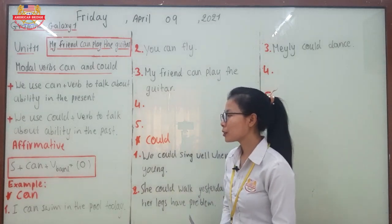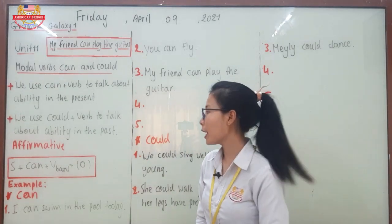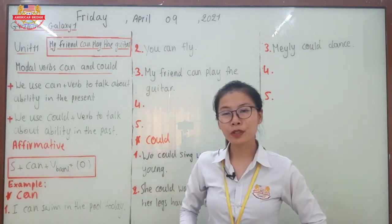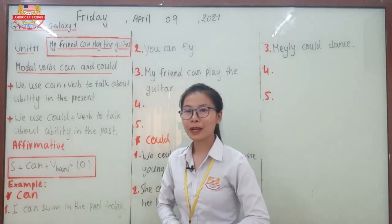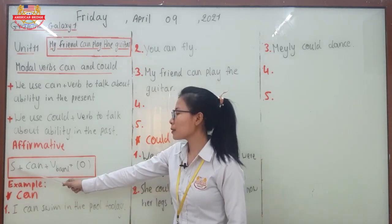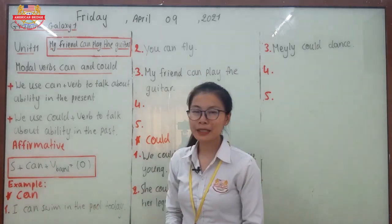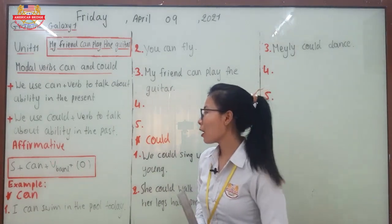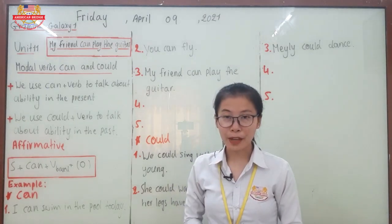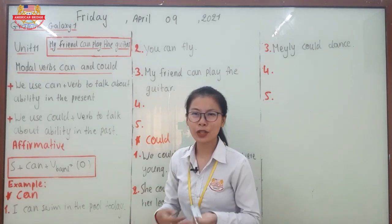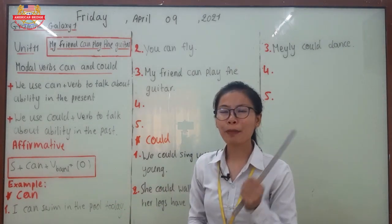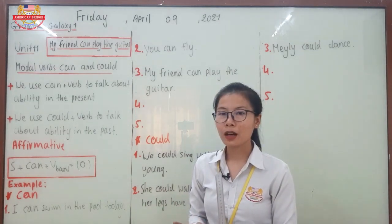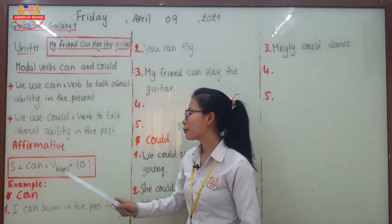Now, the affirmative form is: subject plus can plus verb base plus object. Do you know what verb base means? Verb base refers to the verb that doesn't change its form or pronunciation — also called bare infinitive. We don't add -s, -es, or change the form even in past, present, or future tense; we use the original form.